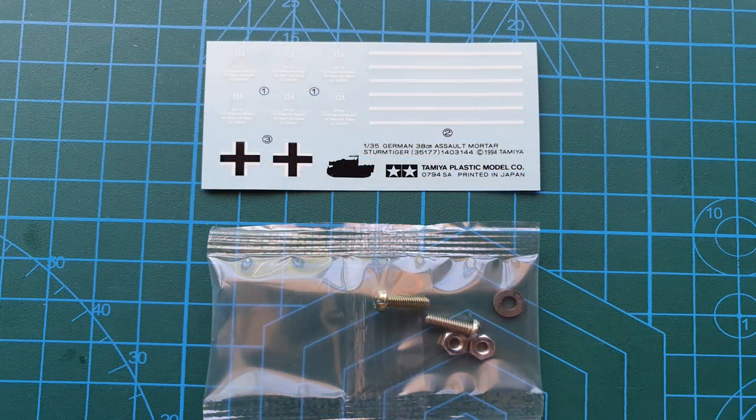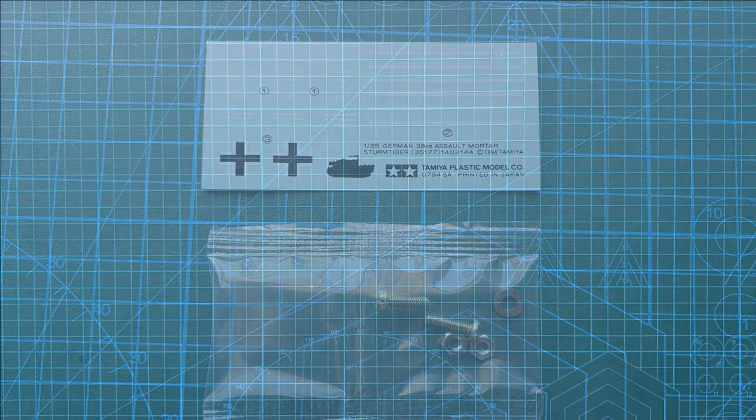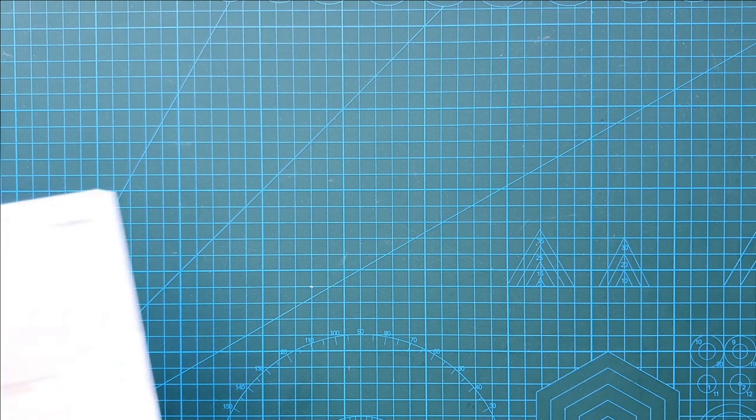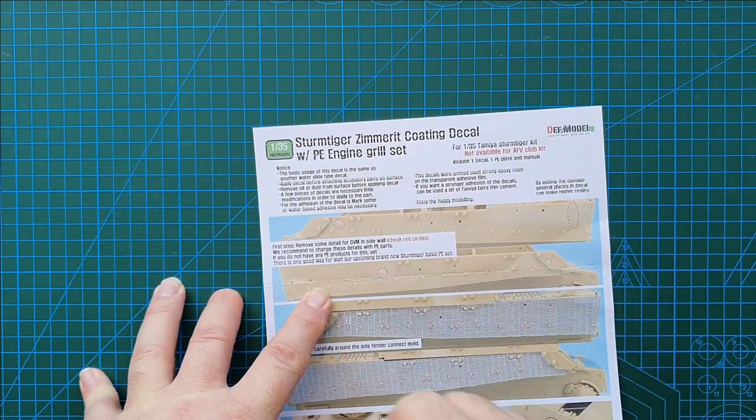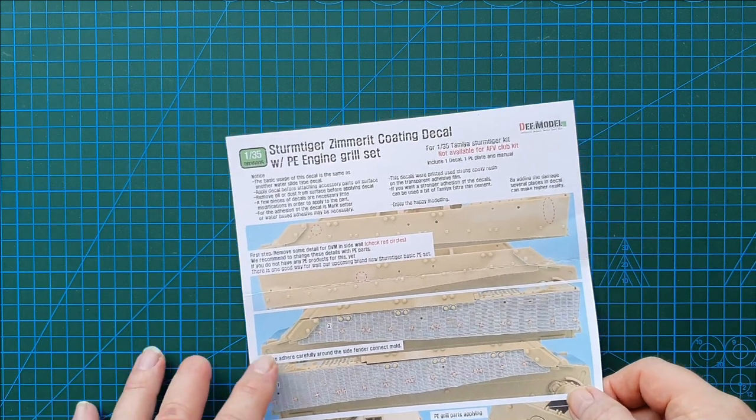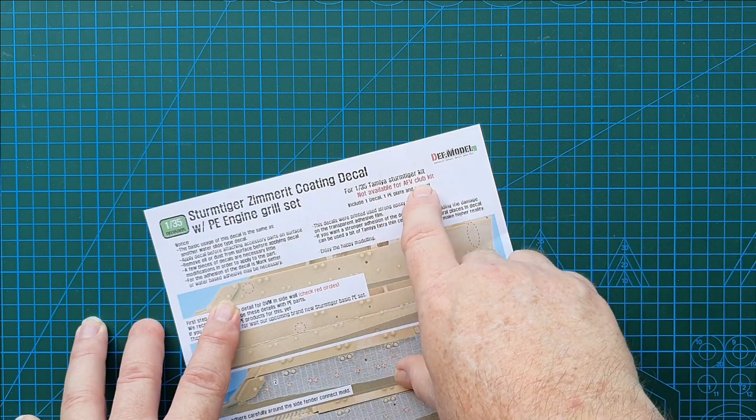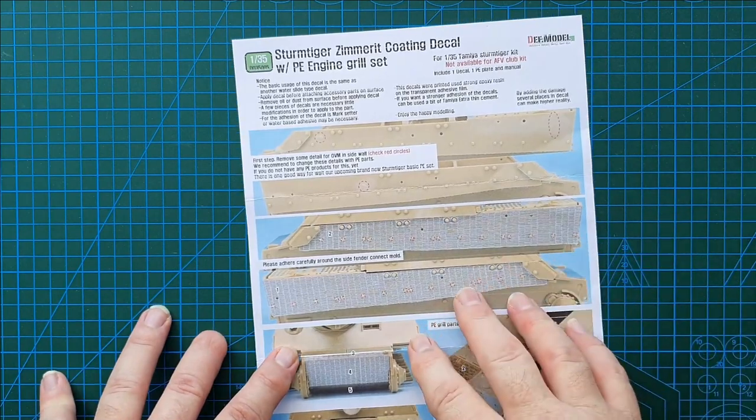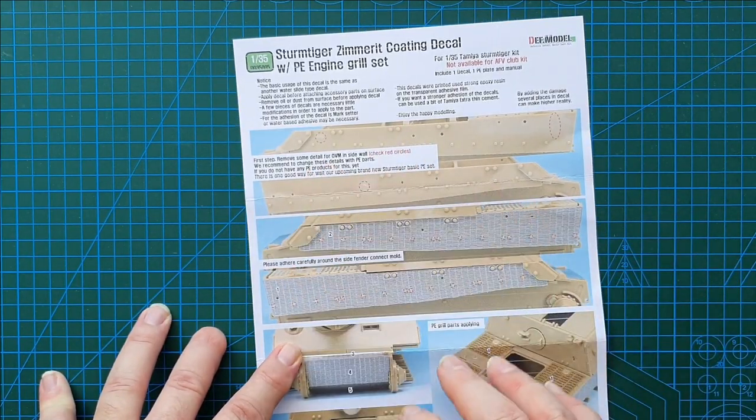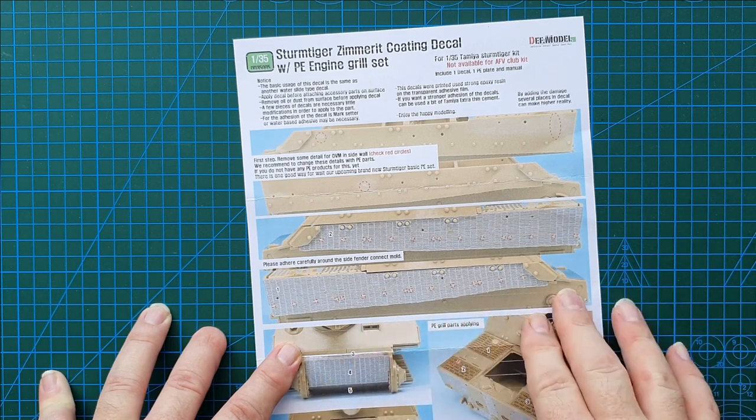Let's have a look at the sprues. But first I'll show you the aftermarket Zimmerit kit I got for this. I was actually wrong - this kit does include the PE engine grills. It shows you how long it's been since I looked at this kit. This one is by Def Model, specifically for the 1:35 scale Tamiya Sturmtiger. These are decals, standard water slide, so no glue required. It's a water slide decal.